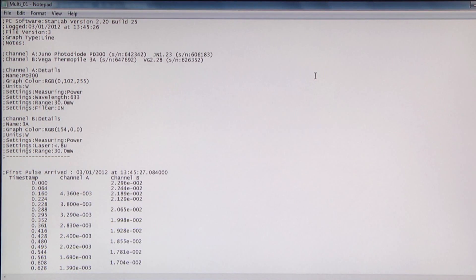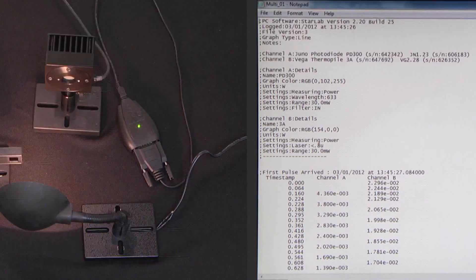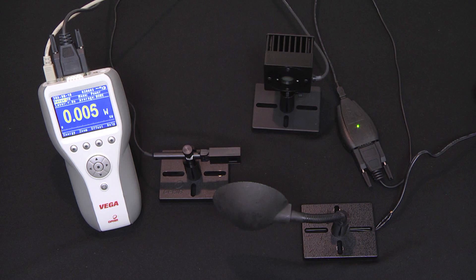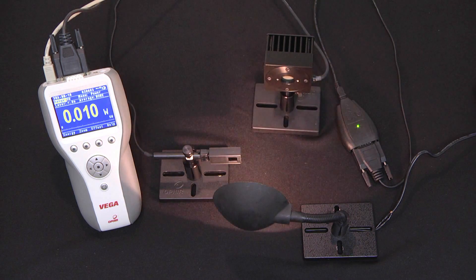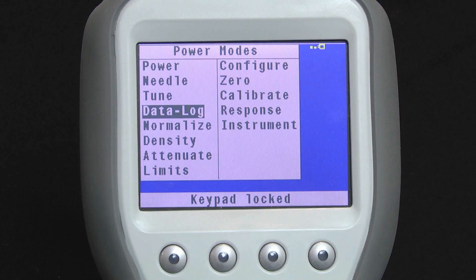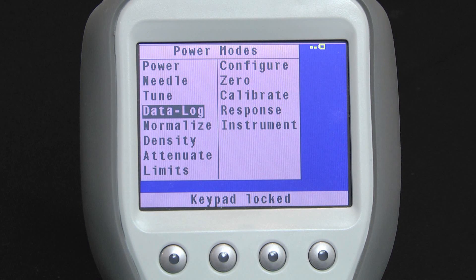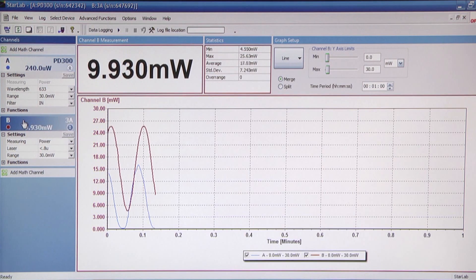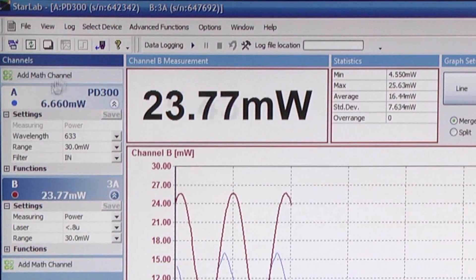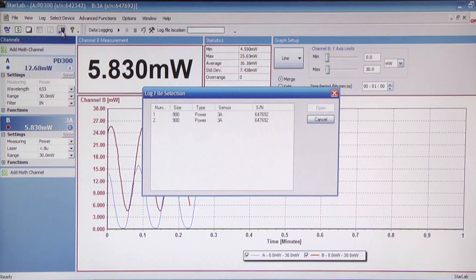We can also open it into Excel or some other program. We can also download data stored in our power meters to Starlab. In this Vega here we have some stored data. Let's click on channel B which is attached to the Vega. Now click on the upload data icon here, and we see a number of files to choose from.